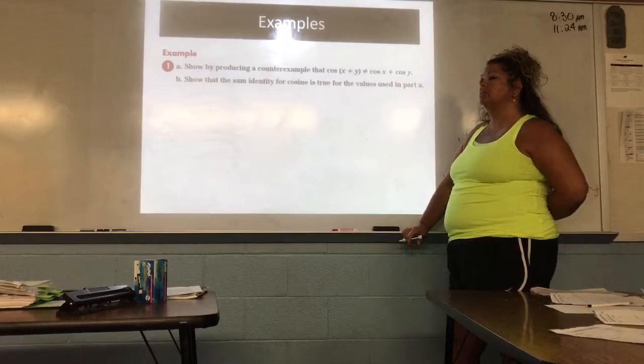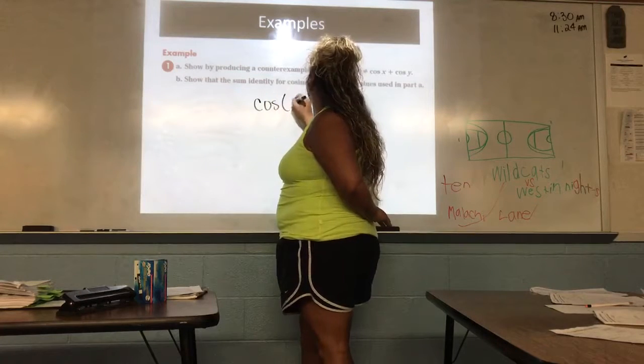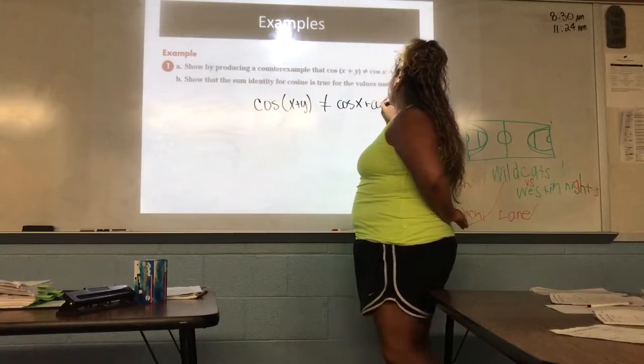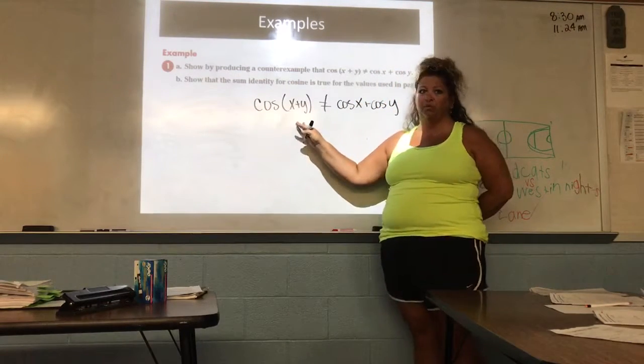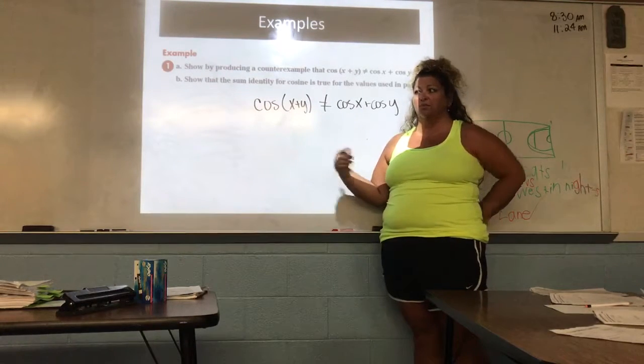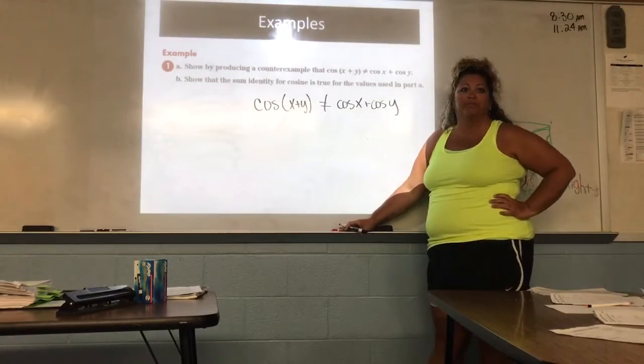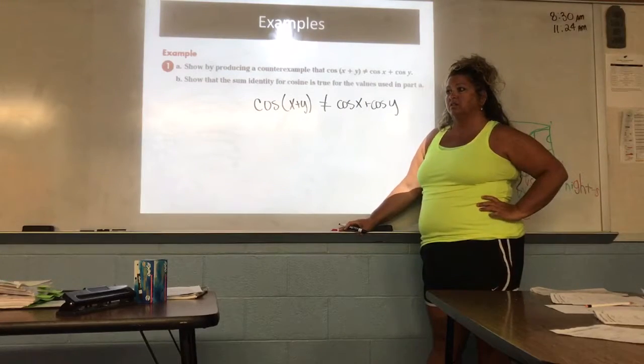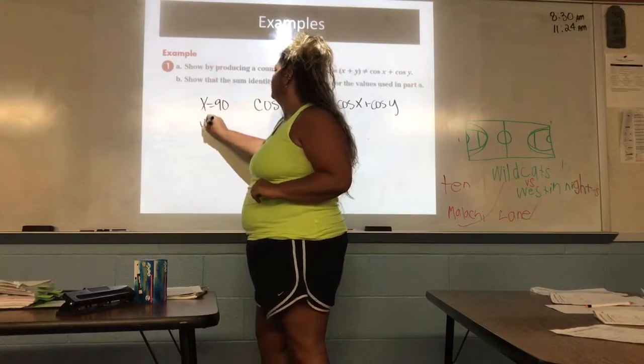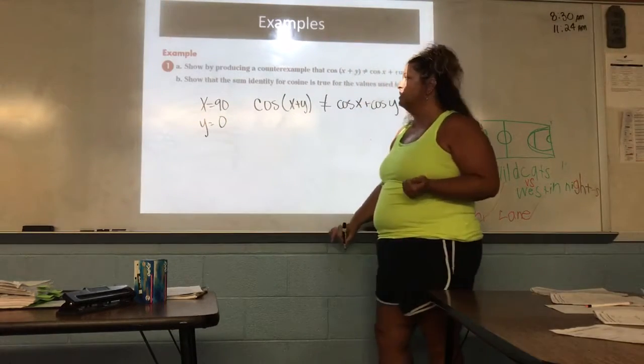So it wants us to talk about a counterexample here. It wants me to explain why cosine of x plus y is not equivalent to cosine x plus cosine y. Because this is what a lot of people want to do. When they see this, they automatically think I can just distribute that because that's what we're so used to doing. Do you agree? Well, let's pick a value for x. Pick one. Something on your unit circle. 90. So she wants x to be 90 degrees.